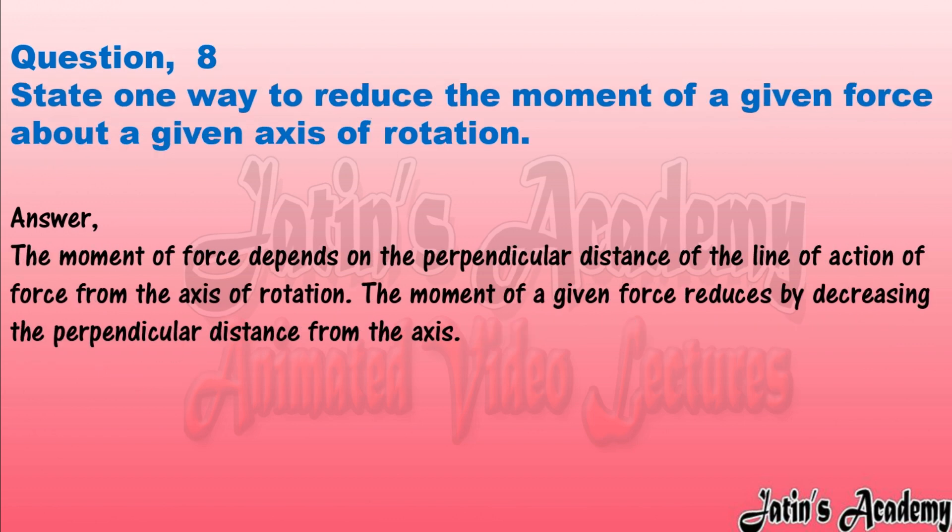Question eight: state one way to reduce the moment of a given force about a given axis of rotation. Answer: the moment of force depends on the perpendicular distance of the line of action of force from the axis of rotation. The moment of a given force reduces by decreasing the perpendicular distance from the axis.